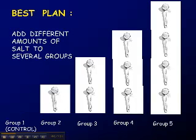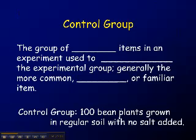The next group, you'd add maybe one teaspoon of salt to a certain amount of soil. Group three, you could add two teaspoons. Group four, more, and so on. So you add different amounts of salt to several different groups.